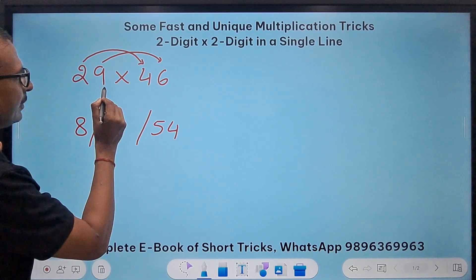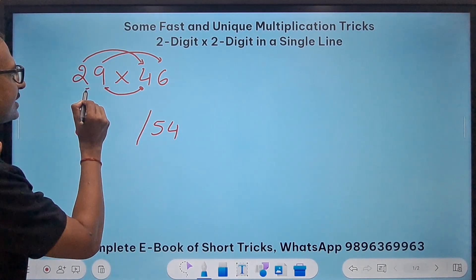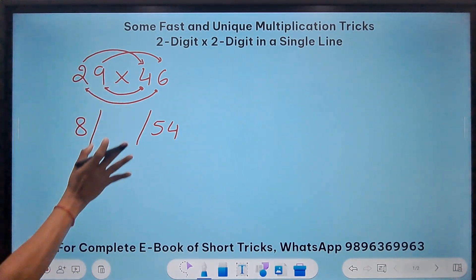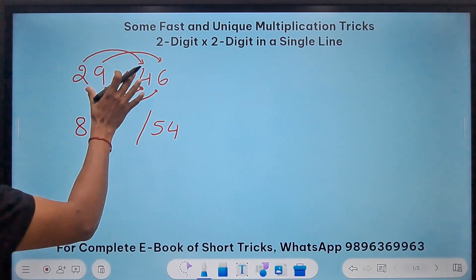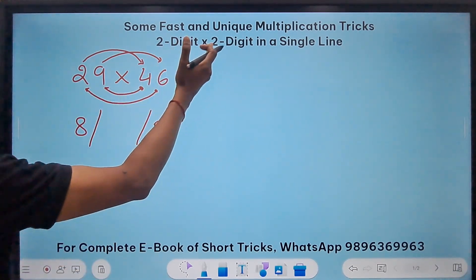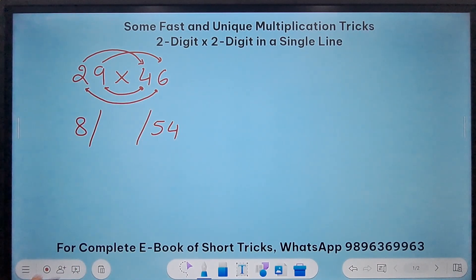The means the middle numbers and the extremes, that is the first and the last number. Now this is the sequence we need to remember and if you practice this sequence I think you can solve each and every 2-digit by 2-digit multiplication in a single line. Maybe in 5 seconds you will be able to do it.